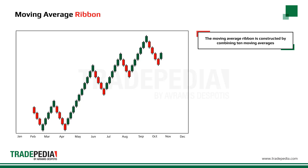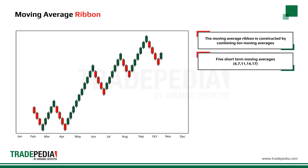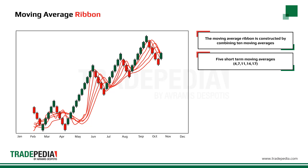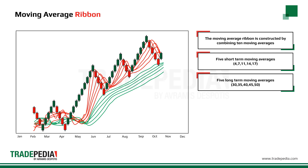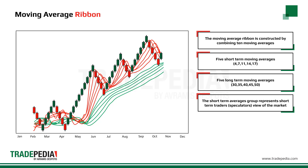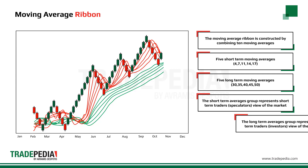The moving average ribbon is constructed by combining 10 moving averages capturing a variety of different time cycles. A popular combination is to use five short-term averages — the 4, 7, 11, 14, and 17 period moving averages — and another five long-term averages — the 30, 35, 40, 45, and 50 period moving averages. The short-term averages group represents short-term traders or speculators' view of the market, while the long-term averages group represents long-term traders or investors' view of the market.